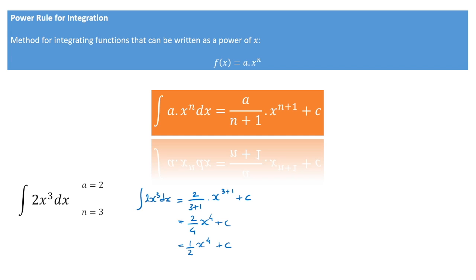And there we have it — we've just integrated that function using the power rule for integration. Now, this power rule only works so long as the power of x is not equal to negative 1. In that case, we'd be looking at functions like a over x, and the power rule won't work. For instance, if we had to integrate 2 over x, we'd have to use a different formula that we'll be learning at a later stage. Nonetheless, there are many functions that can be integrated using the power rule, so let's go ahead and work through some handwritten examples.